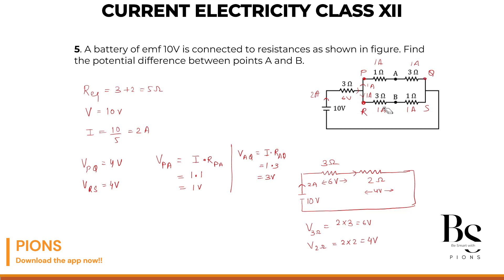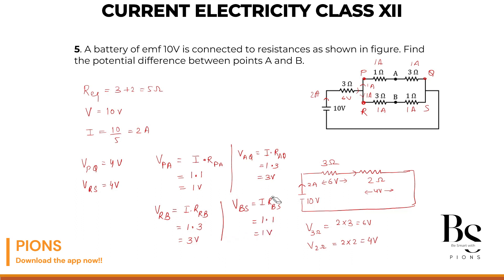Similarly, voltage VRB equals current times resistance across RB, which is 1 ampere into 3 ohm, giving 3 volt. Voltage VBS equals current times resistance across BS, which is 1 ampere into 1 ohm, giving 1 volt. Adding 3 volt and 1 volt gives 4 volt again, satisfying the parallel branch voltage. Everything checks out correctly.